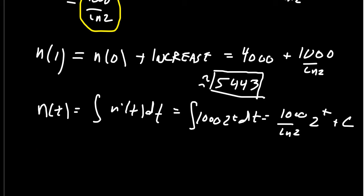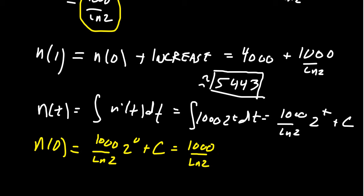We had to know what that constant was. To determine what the constant would be, we would look at some initial value n of 0, which would tell us we had 1000 over the natural log of 2 times 2 to the 0 plus a constant, which that first part would just become 1000 over the natural log of 2 plus a constant. But then we would realize, oh yeah, that's what you get if you plug 0 into the function, but we also know it's equal to 4000 right here.